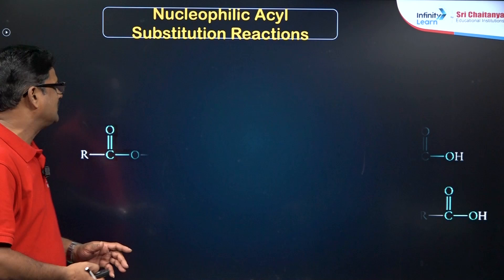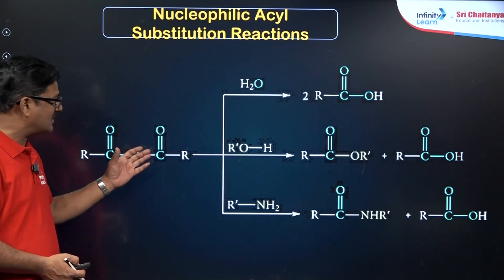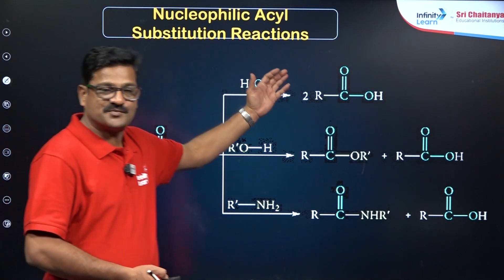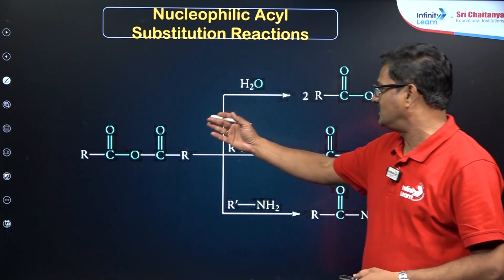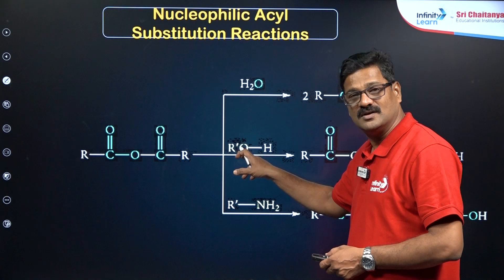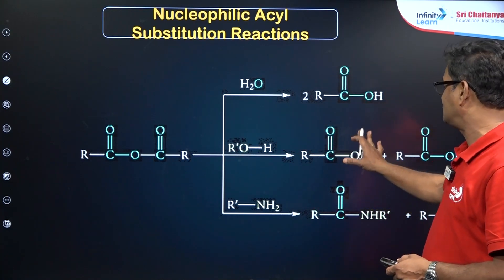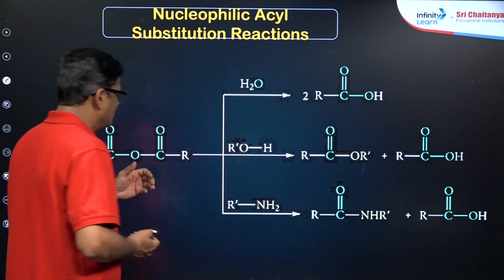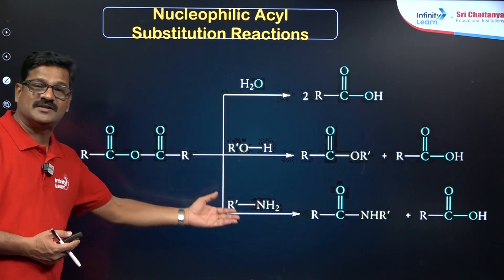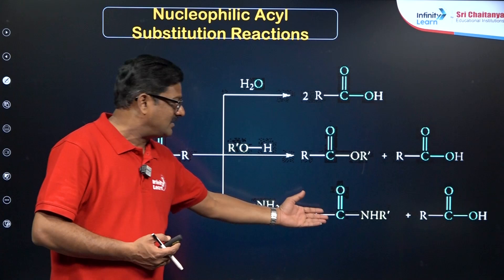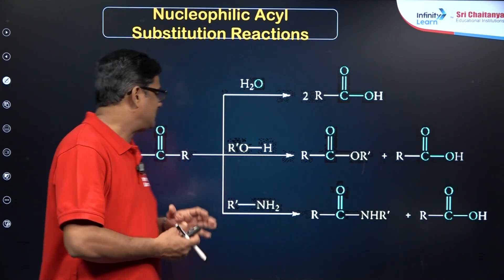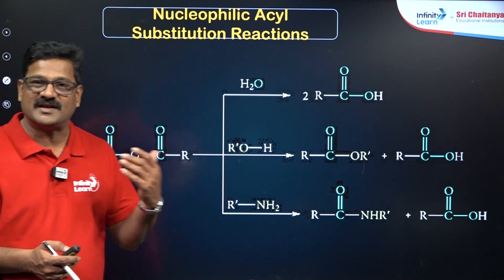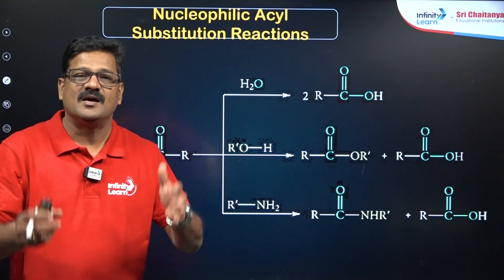Another example: acid anhydride reacting with H₂O gives the corresponding carboxylic acid. Acid anhydride reacting with an alcohol gives both a carboxylic acid and an ester. The carbonyl group can also be attacked by a primary amine to give an amide and carboxylic acid. The cleavage of acid anhydrides is also a best example of nucleophilic acyl substitution.